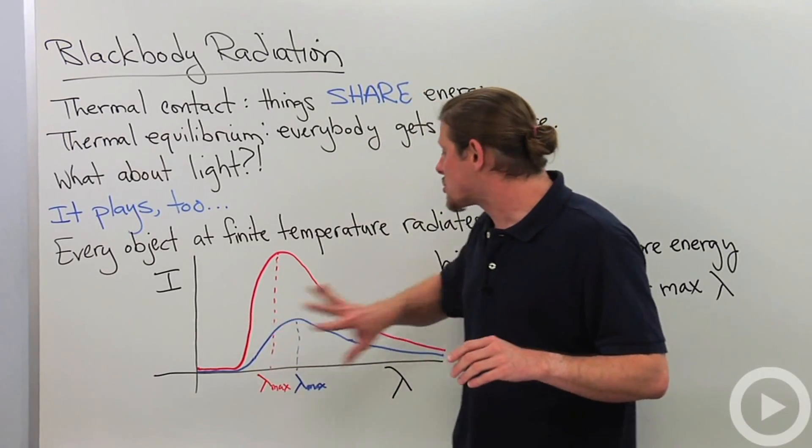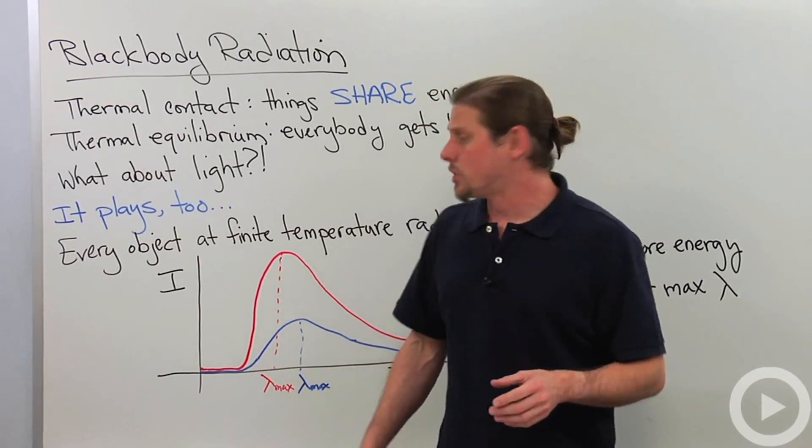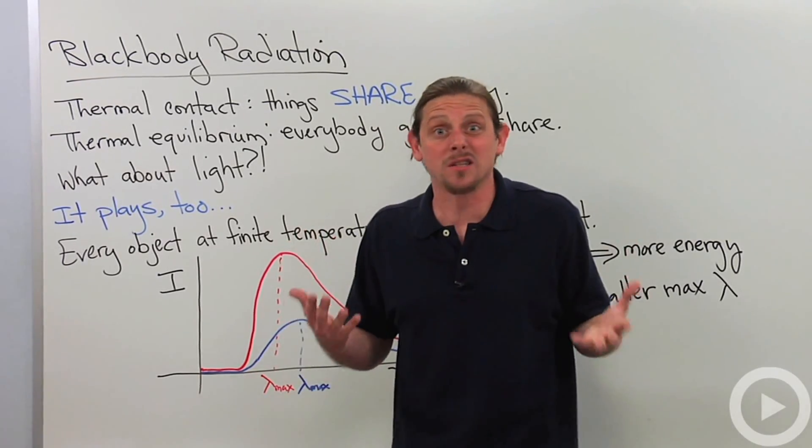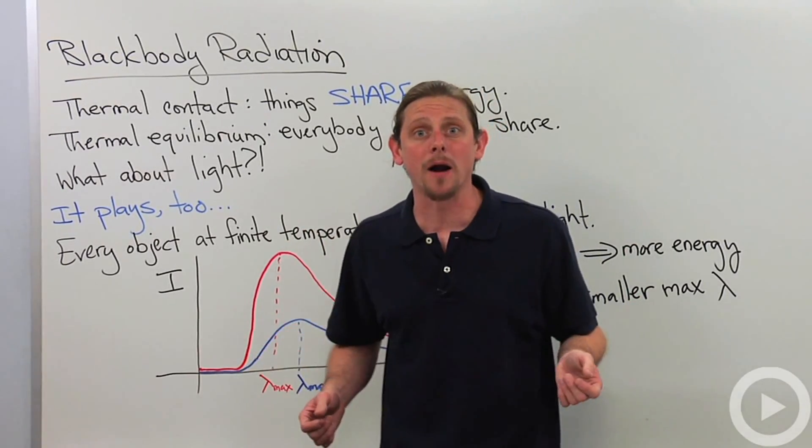These curves are extremely important. They actually led Planck to propose photons. That's where photons come from. They come from this blackbody radiation spectrum.